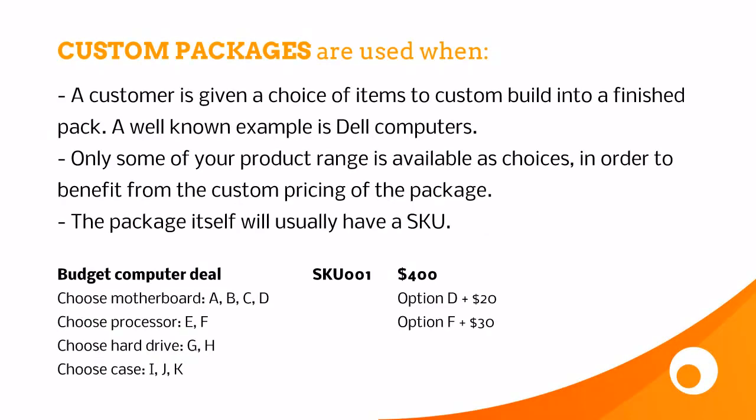Custom packages is a different concept. This is where a customer is given a choice of items to custom build into a finished product, and generally these items are combined at the point of sale. You're not pre-building packages — they're custom and different for every single customer. A retailer defines a number of different products that can be put into the package, and when somebody buys one of each, they get a 10% or 20% discount. The package itself usually has its own SKU, which allows you to track sales and do reporting on which packages are bought versus individual products.